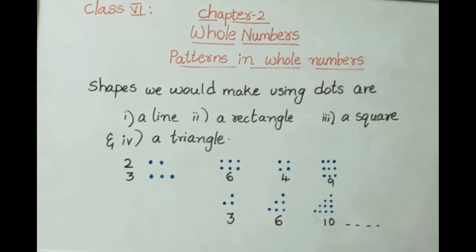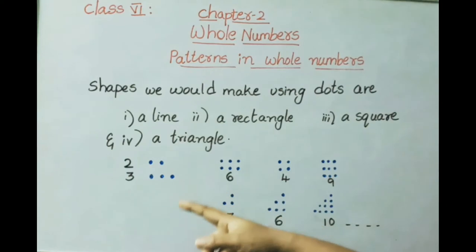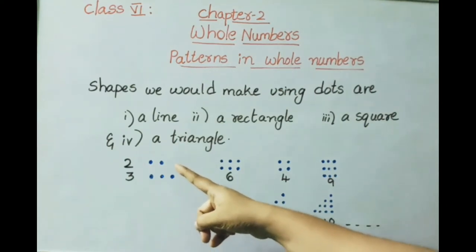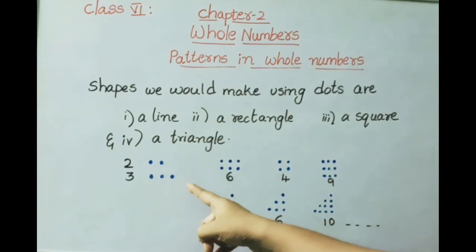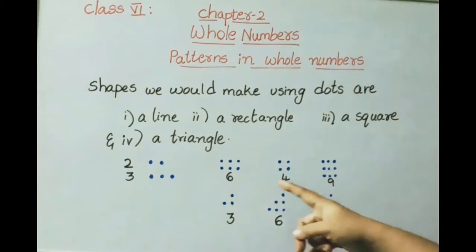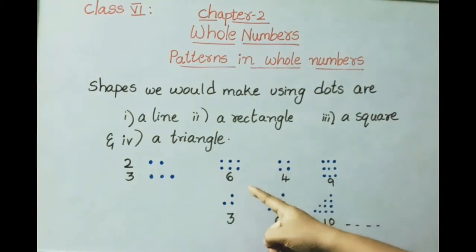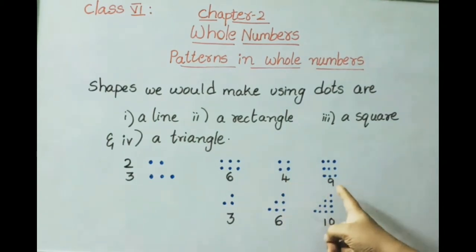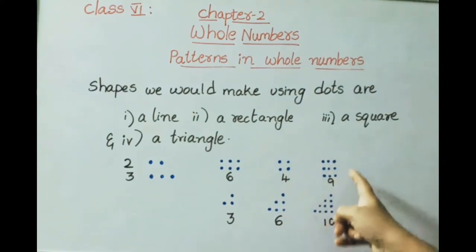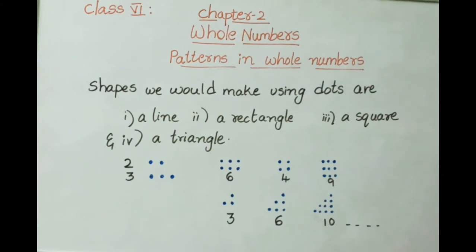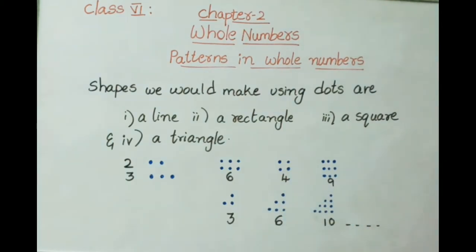Whole numbers can be shown in elementary shapes made up of dots. Numbers 2 and 3 are arranged in the form of a line using dots. Number 6 is arranged like a rectangle using dots. Numbers 4 and 9 are in the shape of a square. Numbers 3, 6, 10, etc. are in the form of a triangle shape.